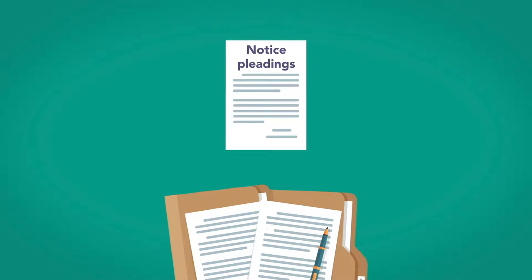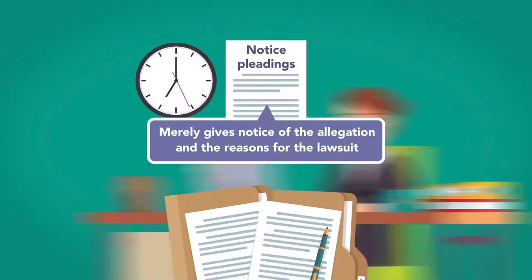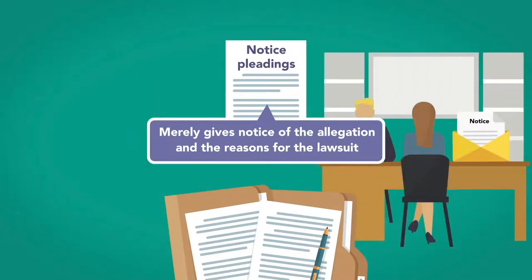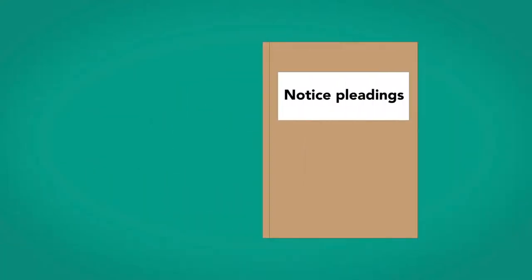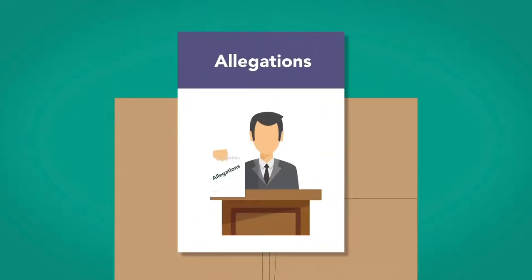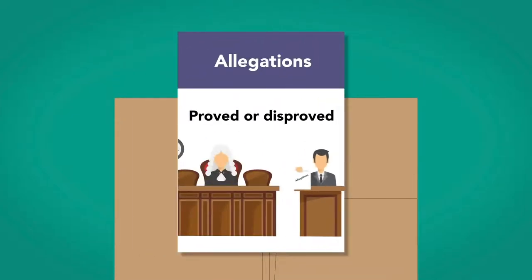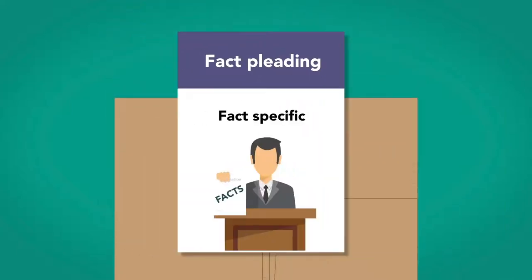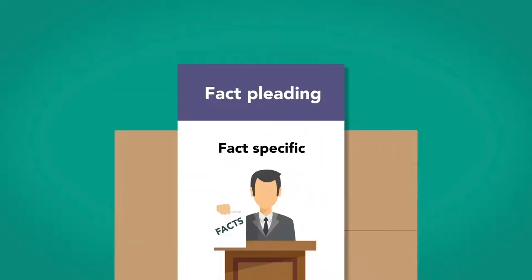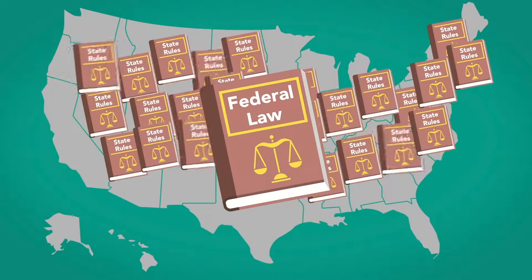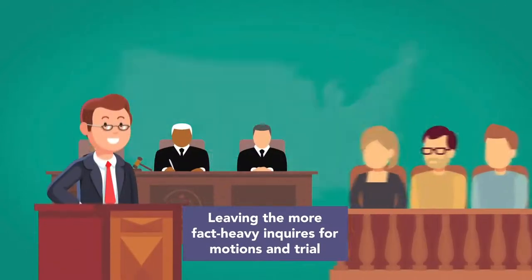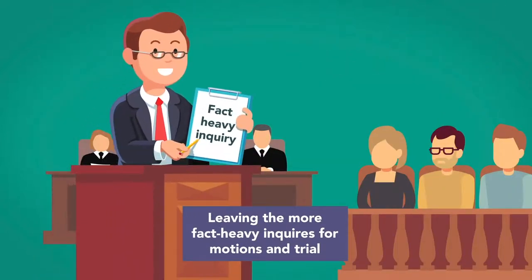Historically, pleadings could be notice pleadings or fact pleadings. A notice pleading merely gives notice of the allegation and the reasons for the lawsuit. Rather than offering proof, notice pleadings offer allegations, which are then proved or disproved during the proceedings. Fact pleadings, on the other hand, are fact-specific. Today, the federal rules and the rules in most states require only notice pleading, leaving the more fact-heavy inquiries for motions and trial.